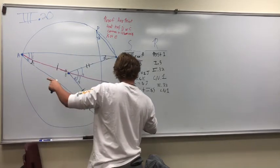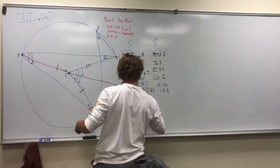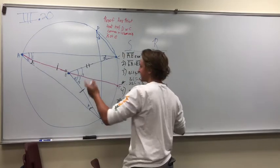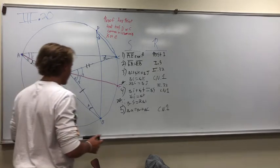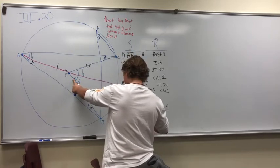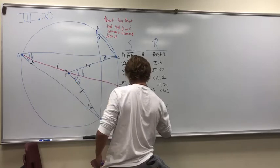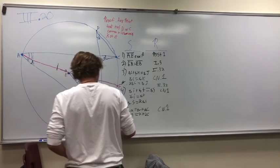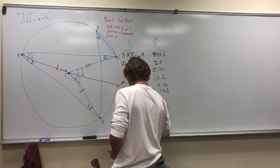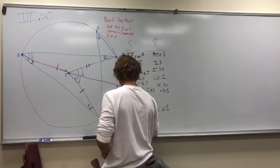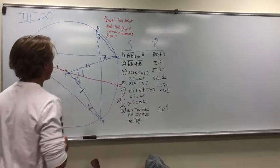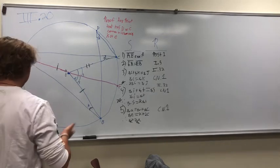Now we know that angle A equals angle I plus angle C, because it's the same angle just split. We also know that angle E equals 2I plus 2C. Therefore, we can say angle E equals 2·angle A. We can do that because of Common Notion 1 and the math we've just done.